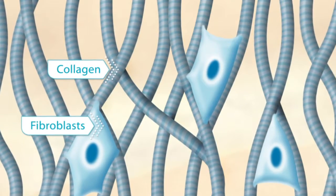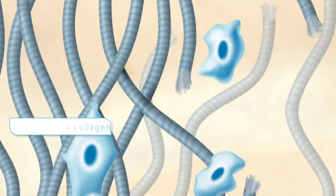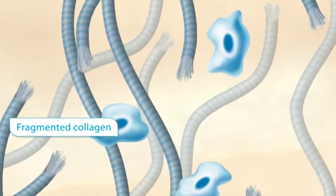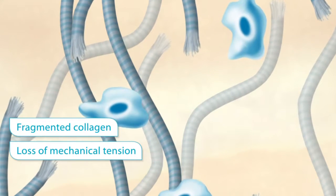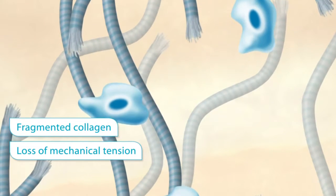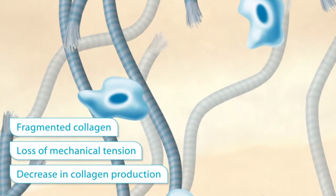During the aging process, the collagen fibers deteriorate and fragmented collagen accumulates. As a result, the mechanical tension decreases and fibroblast activity is impaired, leading to decreased collagen production and an increase in collagen-degrading enzymes. This reduces skin integrity and promotes a cycle of structural loss.